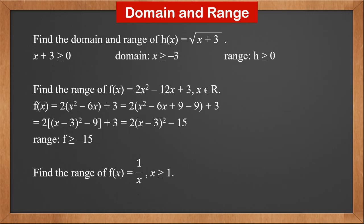Find the range of f(x) equals 1 over x, for x greater than or equal to 1. We know f(1) is 1, f(2) is half, f(3) is 1 third, and so on. The greater the x, the smaller the f. When x gets very large, f approaches 0 but can never be 0. Therefore, the range is 0 less than f less than or equal to 1.